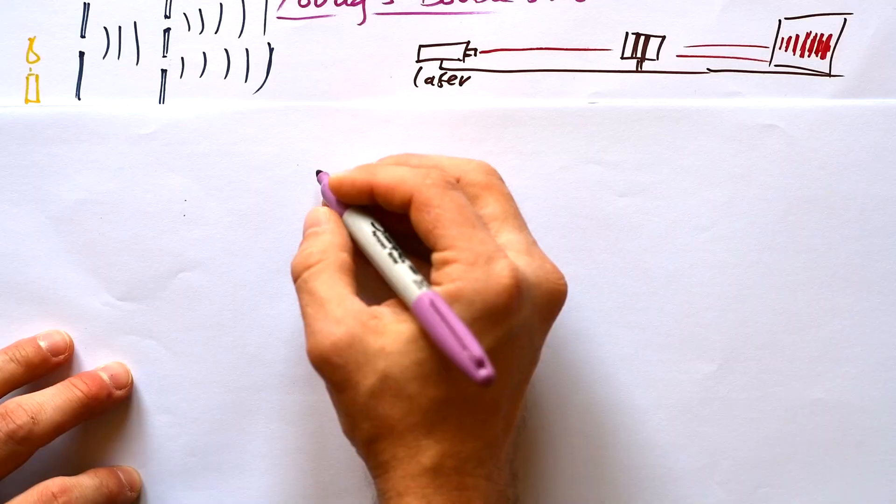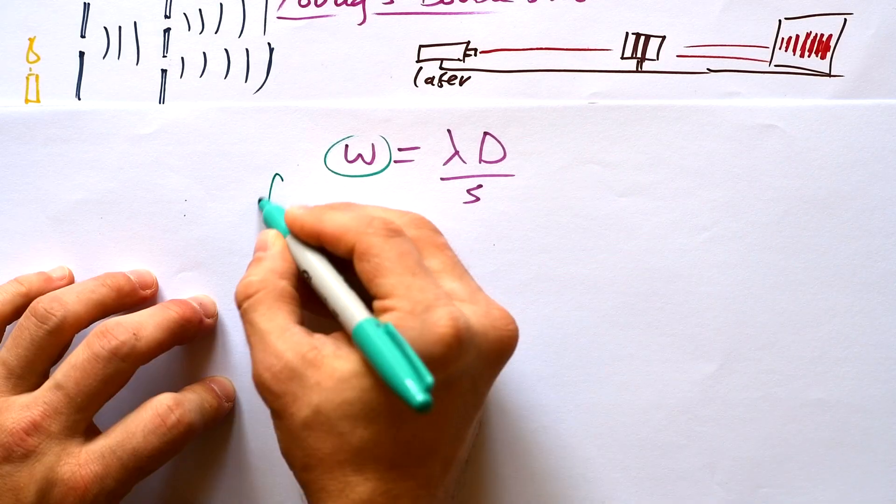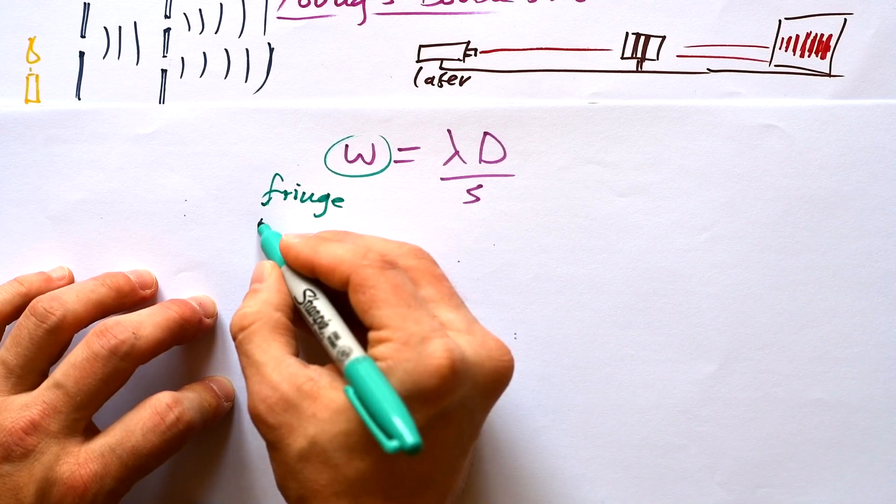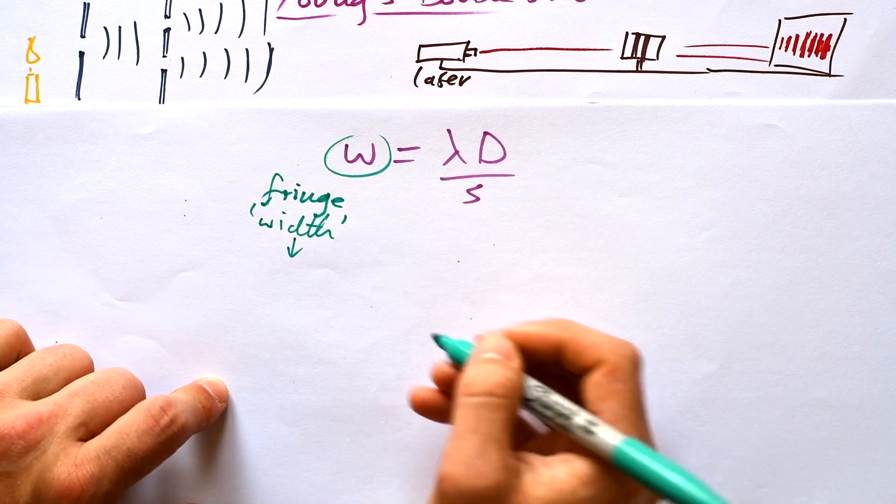Now Young's double slit equation is this W equals lambda D over S where W is fringe width or fringe separation or fringe spacing. I prefer width because it starts with a W.